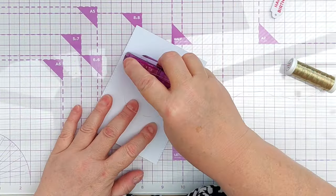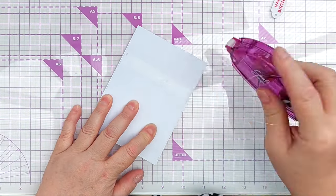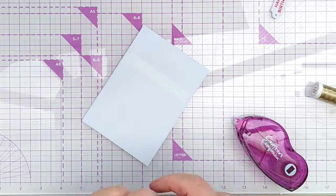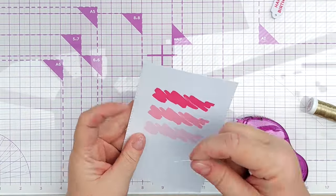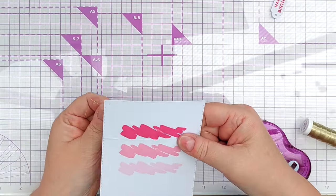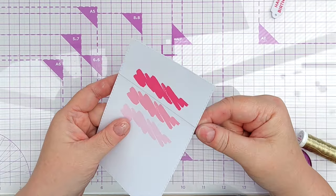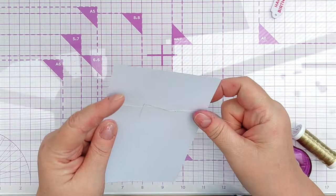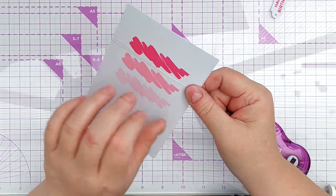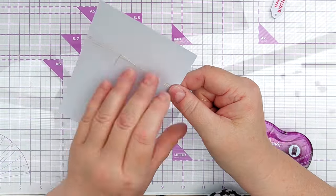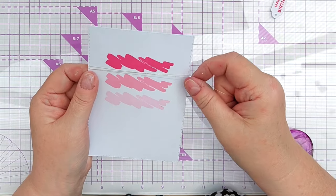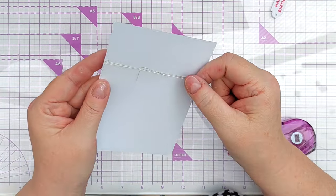To attach my tags to my cards or my panels rather, I decided I was going to add them with thread which is why I stamped on both sides of the tag. They're not going to be glued down flat, they might flap about a bit and turn themselves over. So I wanted the sentiment to always be visible and this way it is.